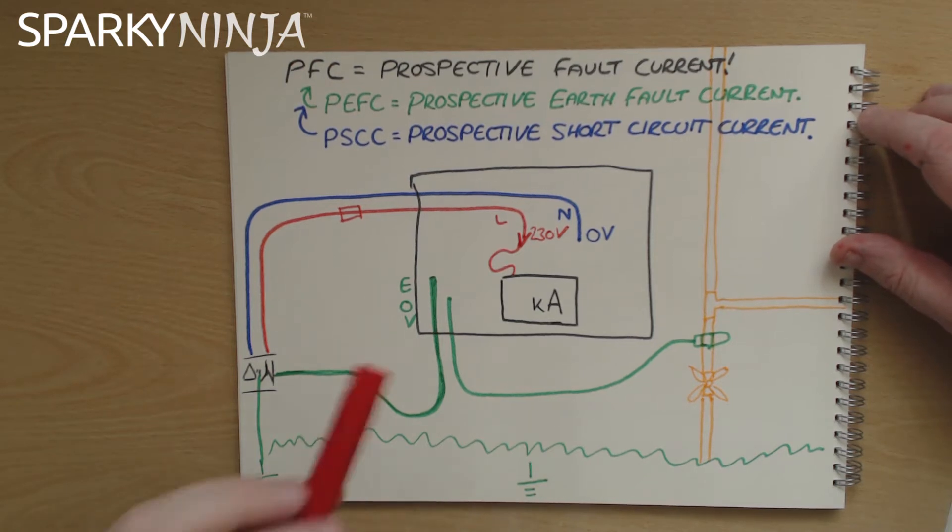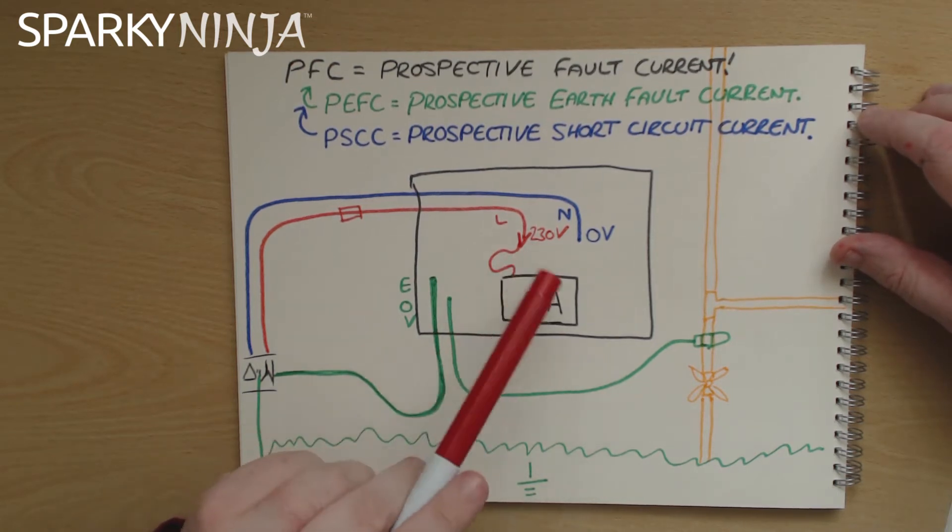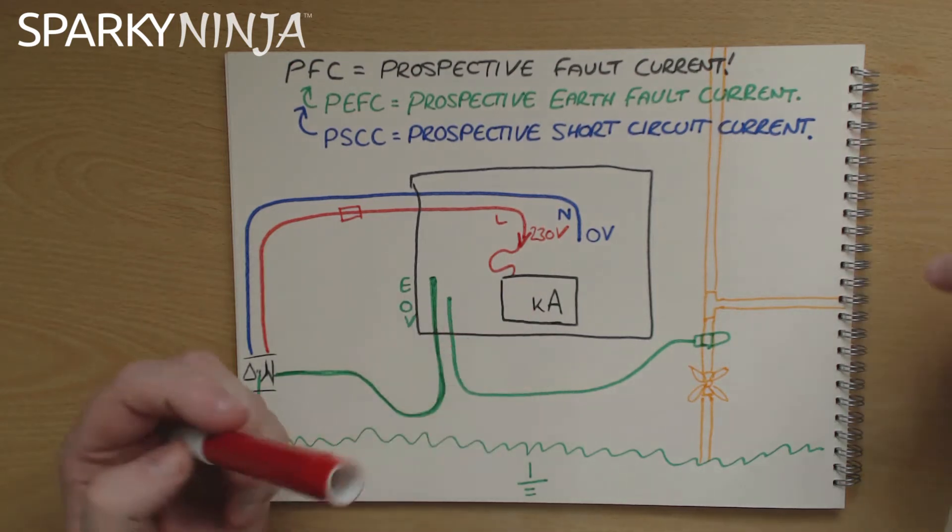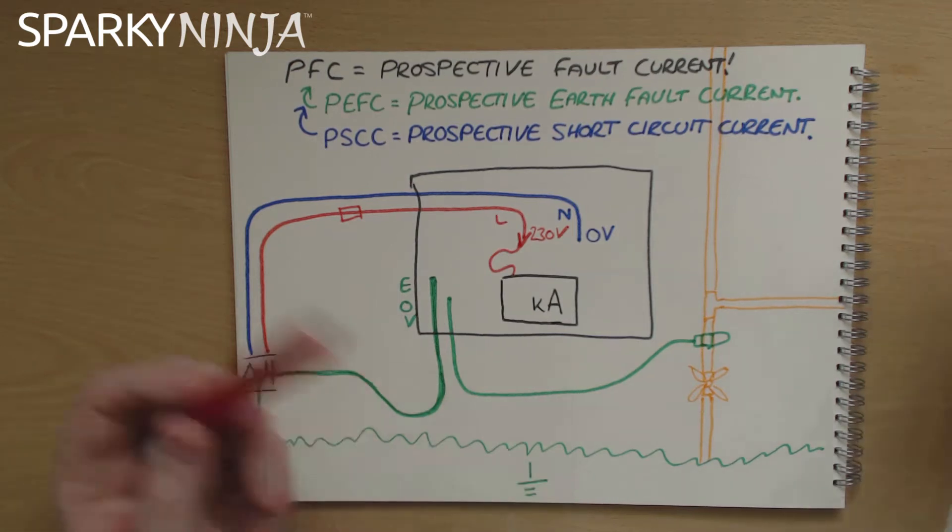The key thing to notice here are the voltages. So we have the line conductor with a 230 volt voltage. We have a neutral of zero volts and we have an earth of zero volt and we know that for current to flow there has to be a potential difference.